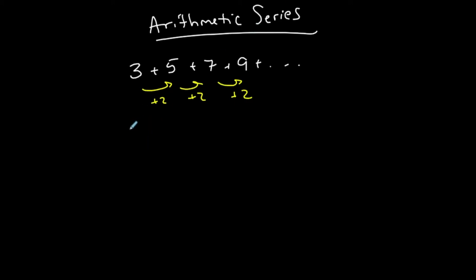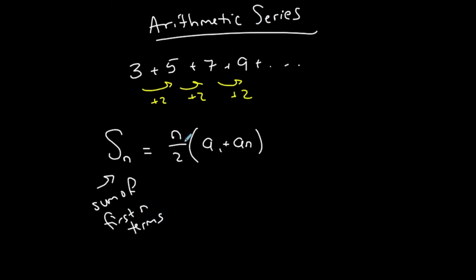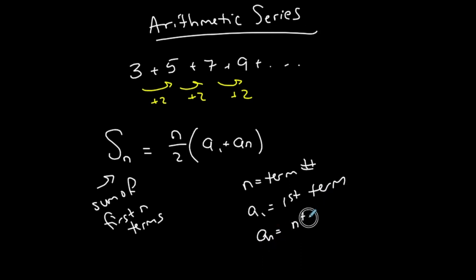With arithmetic, we can actually find the sum of the first n terms of an arithmetic series by using this formula: n over 2, times a1 plus an. Sn is the sum of the first n terms of an arithmetic series. n is the term number, a1 is the first term, and an is the nth term. Note this is the sum of a finite series, not infinite, because obviously this is just going to keep growing.